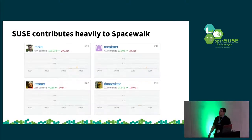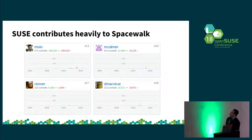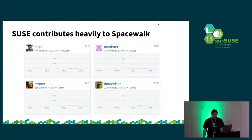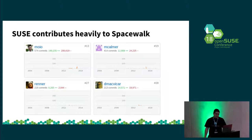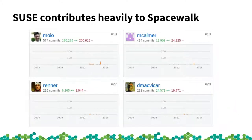You can see a screenshot showing some of our developers' commits to the Spacewalk project. There's something interesting: the trend was of heavy contribution until around 2014 and it slowed down after that. The reason is the launch of Red Hat Satellite 6, so Red Hat doesn't have so much interest in Spacewalk anymore.